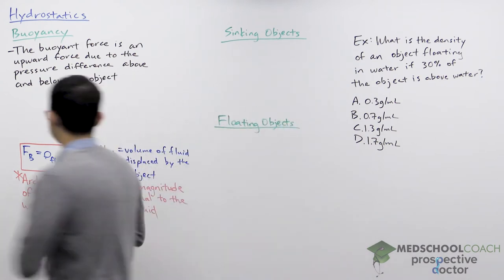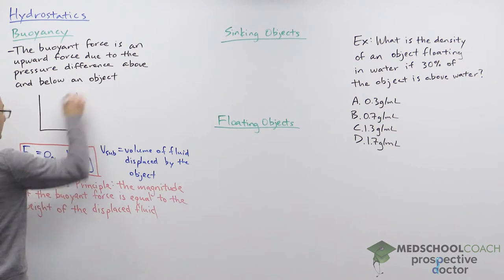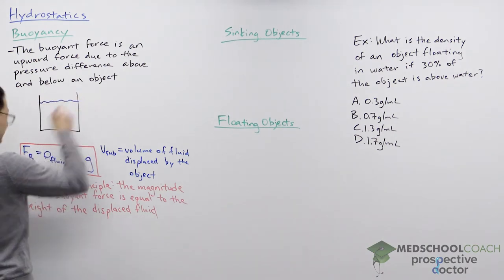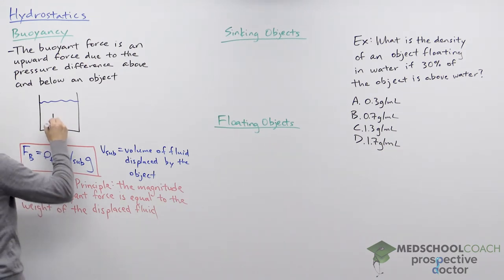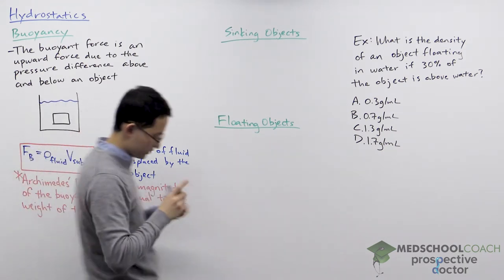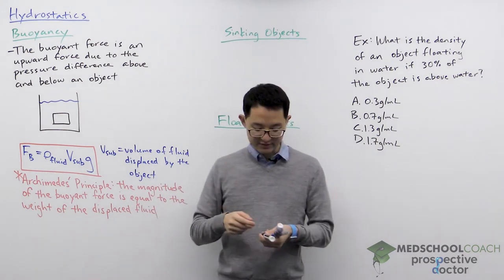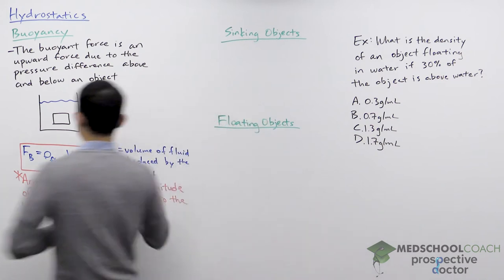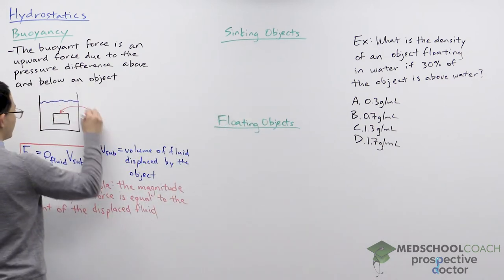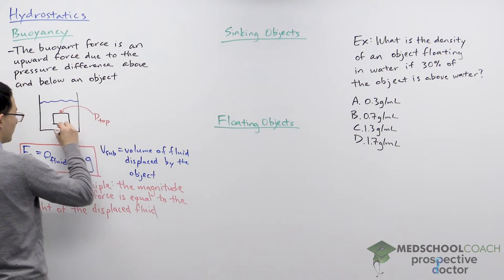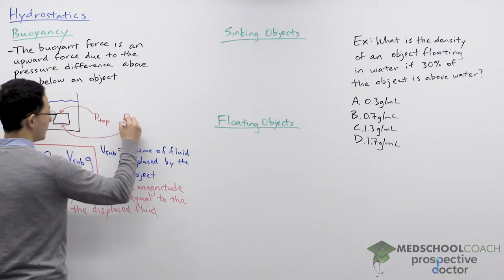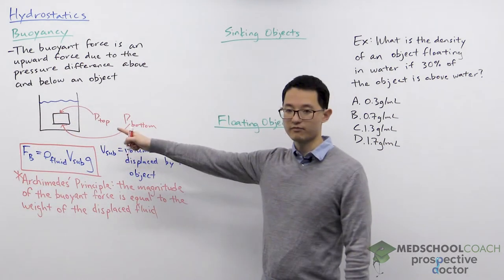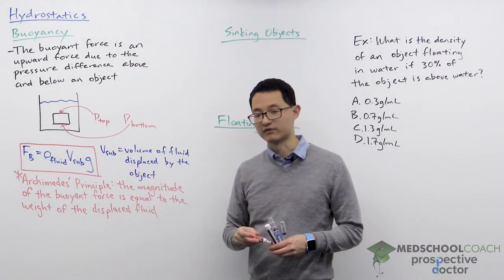To see how this works, let's draw up the situation. We have a container, a fluid, and within this container we have an object. What I'm interested in is the pressure above the object as well as the pressure below the object — comparing the pressure on top versus the pressure on the bottom.